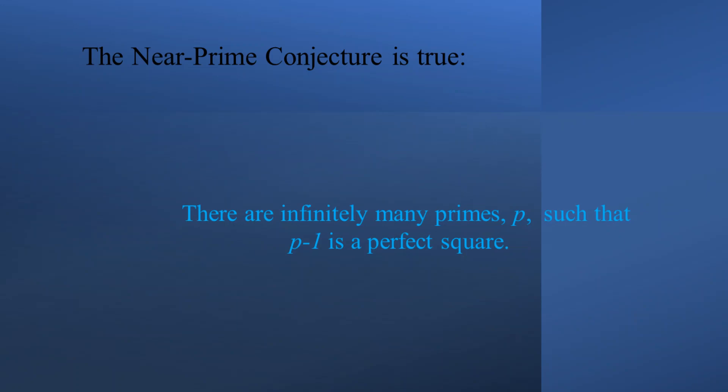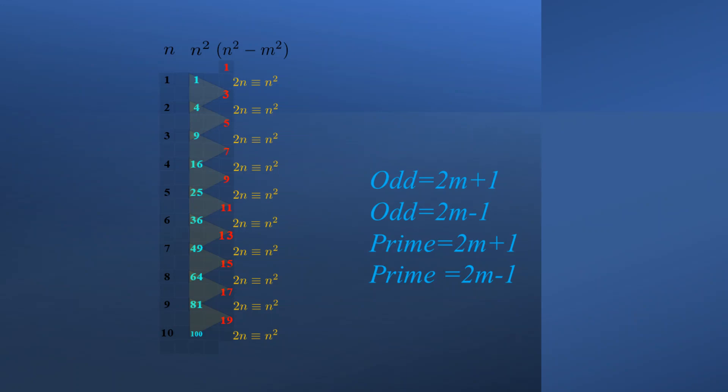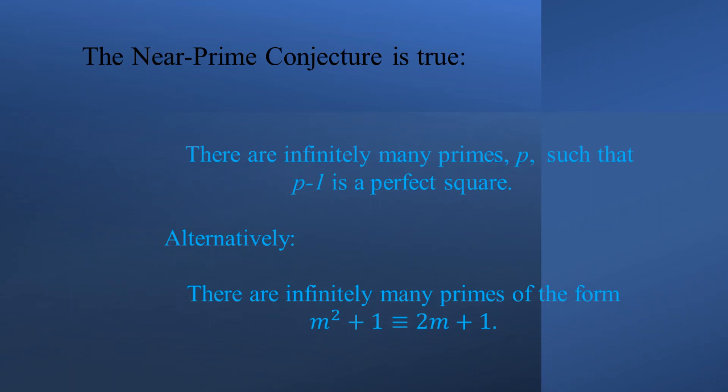Let's once again consider our number line. Any and every odd integer along this infinite number line may be formed by the addition or subtraction of 1 to form some even integer. Therefore, some odd equals 2n plus 1, or some odd equals 2n minus 1. Since all primes greater than 2 are odd, then all odd primes satisfy the equations: some prime equals 2m plus 1, and some prime equals 2m minus 1, where m is some integer. And since these primes are formed along an infinite number line, there are infinitely many primes of the form 2m plus 1. So we very nicely proved the alternative version of Landau's near prime conjecture.